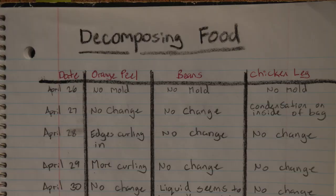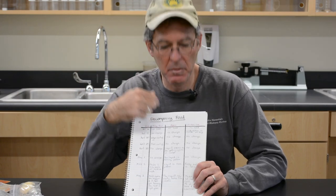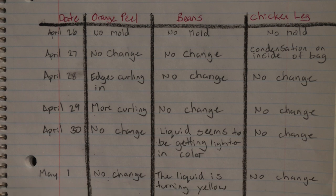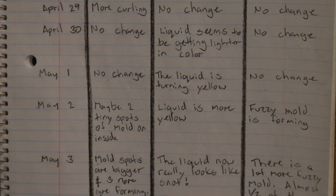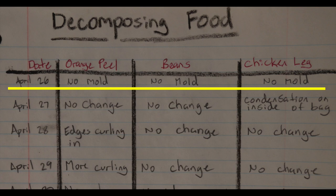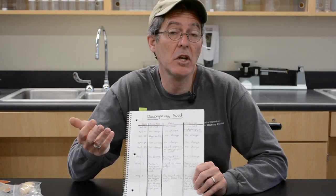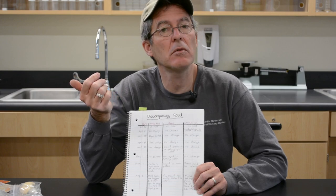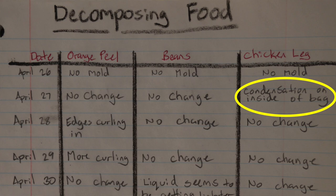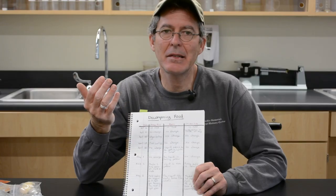You're going to keep an observation log again — this one looks a lot like the change over time one. Four columns: the first one has the date, and then the other three each correspond to the food item you're going to use. If you want to do more, that's fine — just turn the page and make more columns. What you're going to put for each line on each date for the food items is how they've changed. So the first day, when you put it in the bag, there should be no mold on it — write that down: no mold. Every day after that, when you check it, put the next date and say how it's changed. If there's no change, just write no change or still no mold. If water ends up on the surface of the bag from the moisture, put there's condensation on the bag.